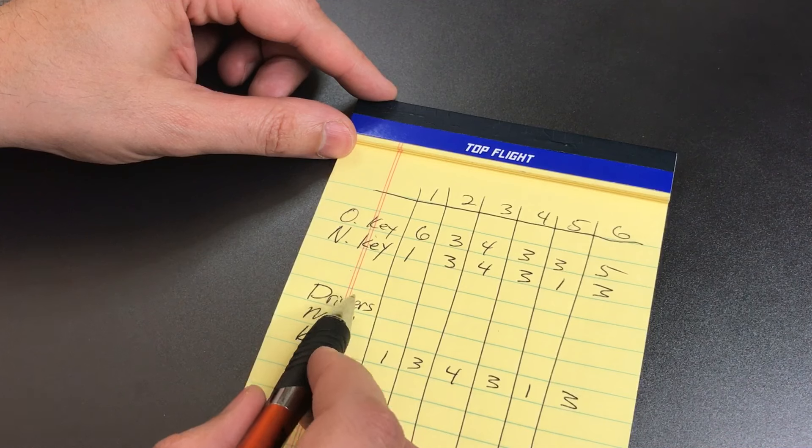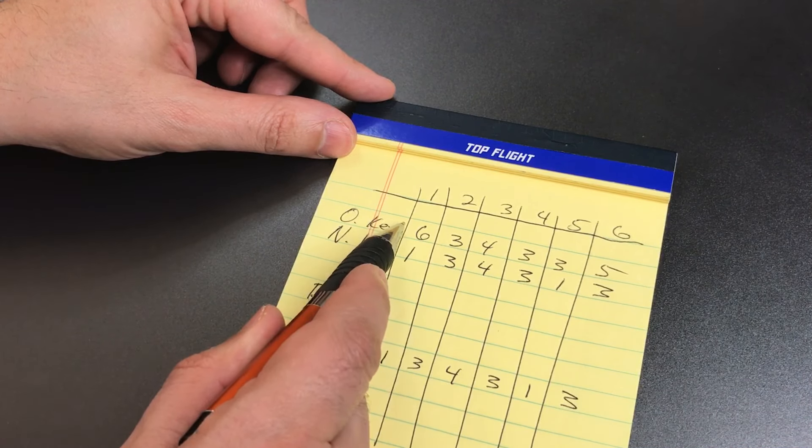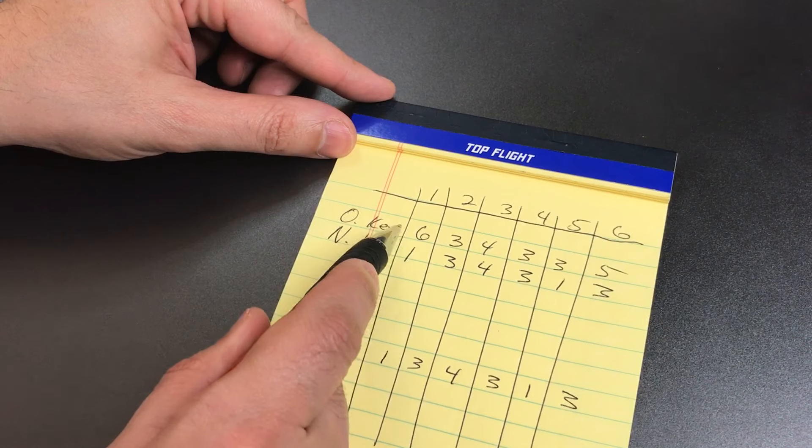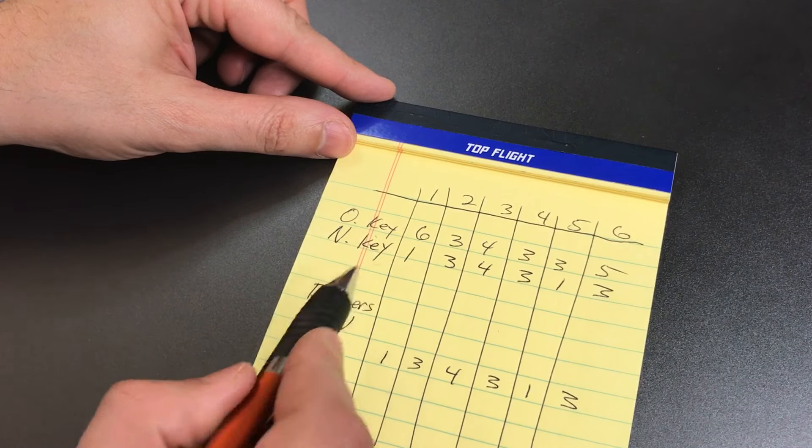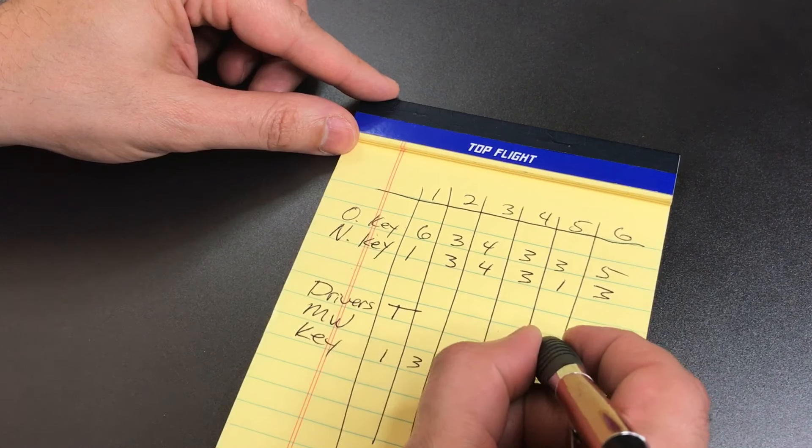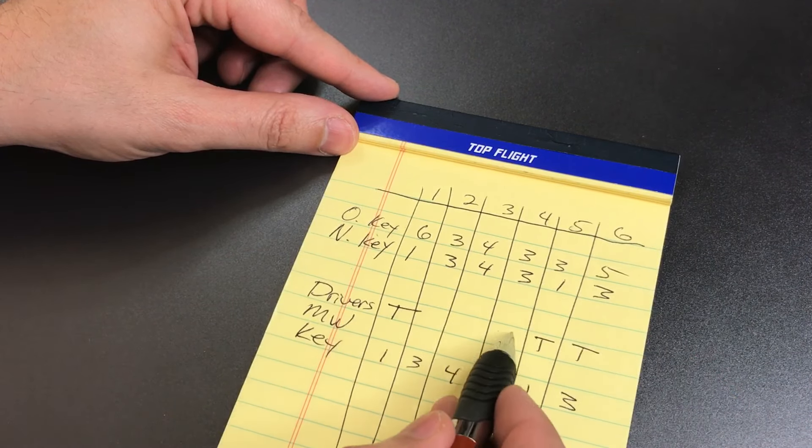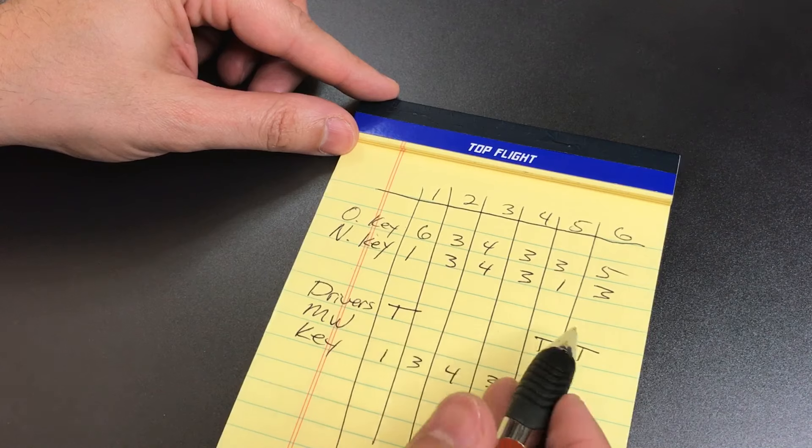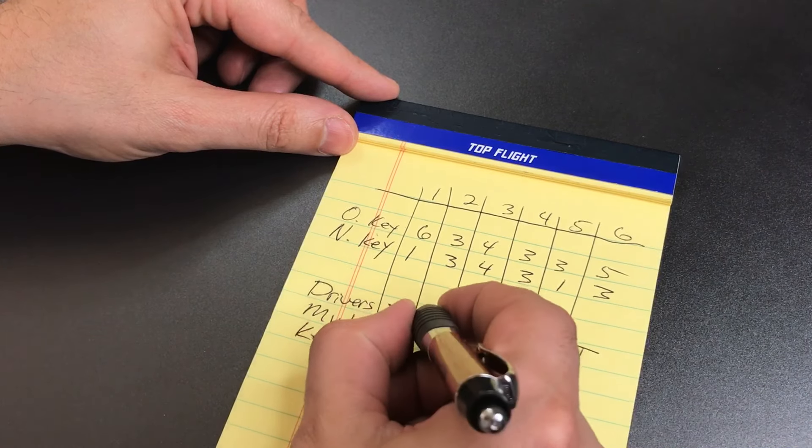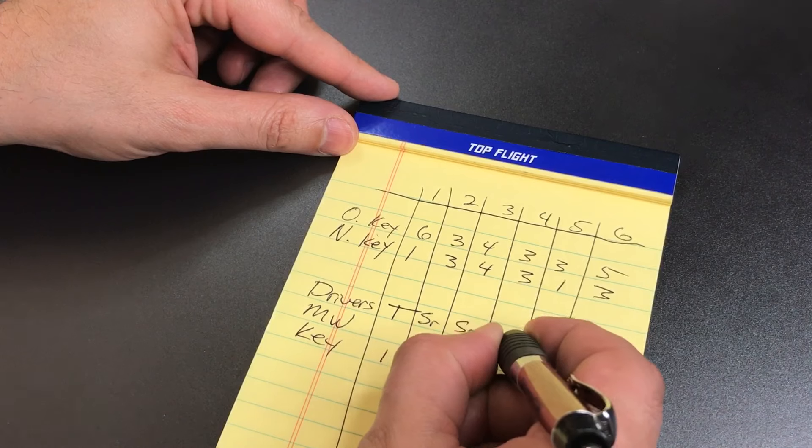Now for the driver pins, we're going to take every column where the old key has a deeper cut than the new key. That is a higher number than the new key. And we're going to put a T pin there. So we'll put a T pin here, here, and here. And for these other chambers, what we're going to do is just insert the security pin of our choice. So I'm going to put a serrated, a spool, and a serrated.